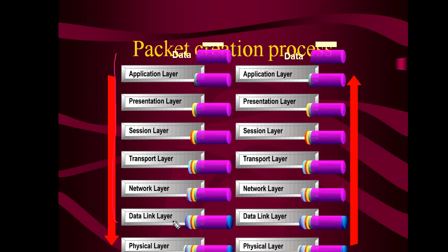The physical communication is like this path shown here — that is the actual physical communication. But peer-to-peer communication means a virtual communication shown by dotted lines. Whatever header is put by the transport layer — whatever changes done by the transport layer — will be removed by the transport layer only. That means the transport layers of the two machines communicate virtually, and that communication is called peer-to-peer communication.